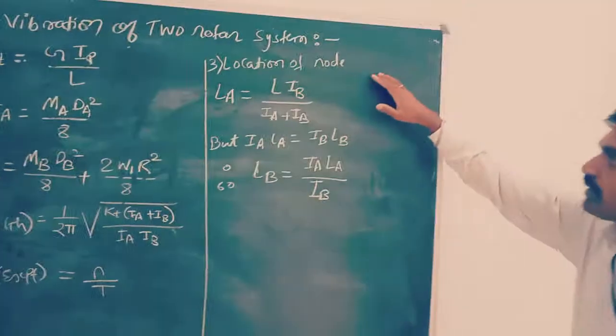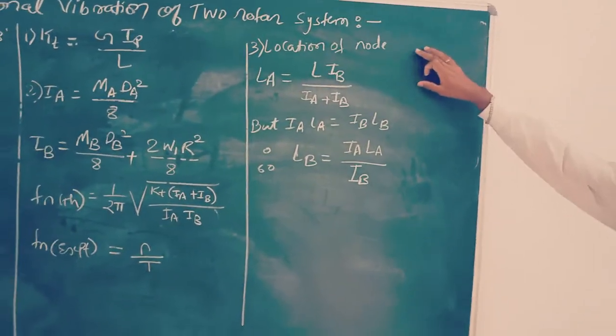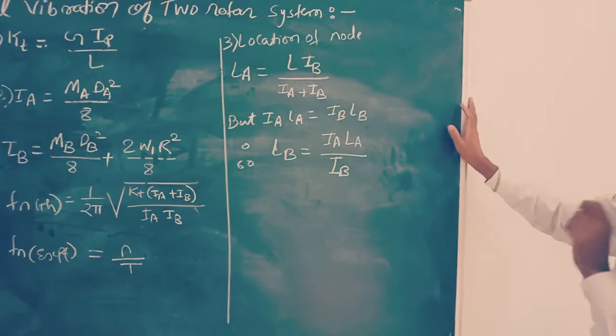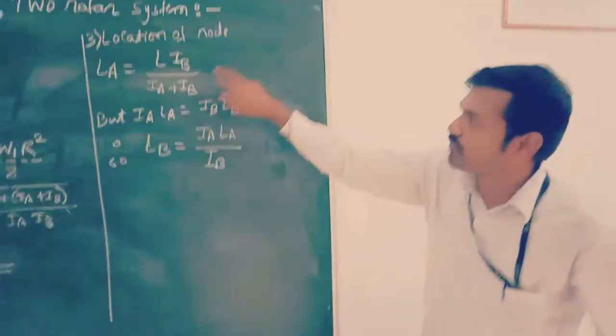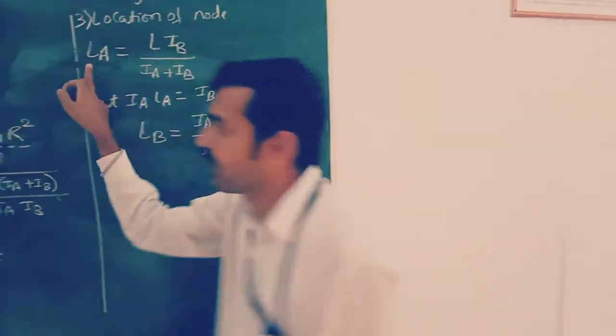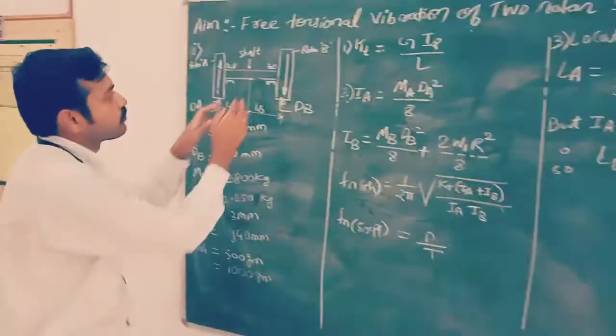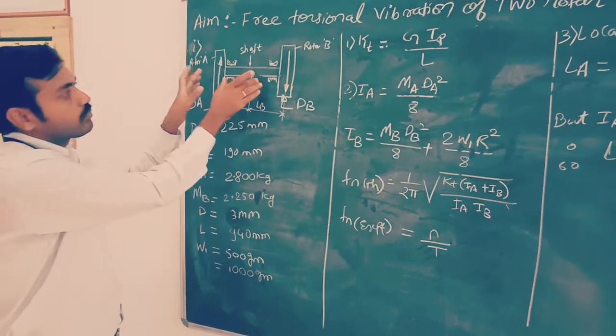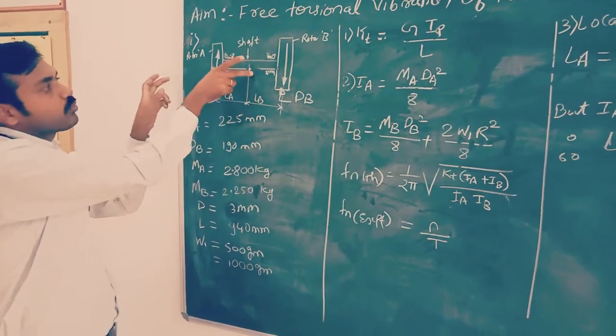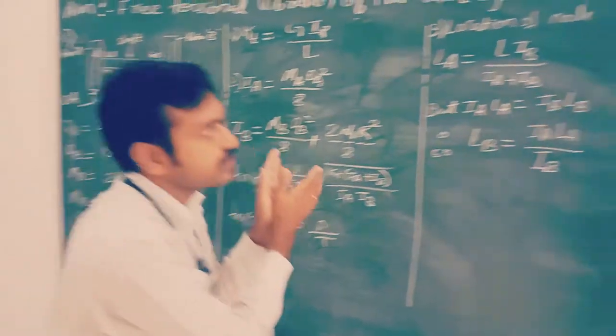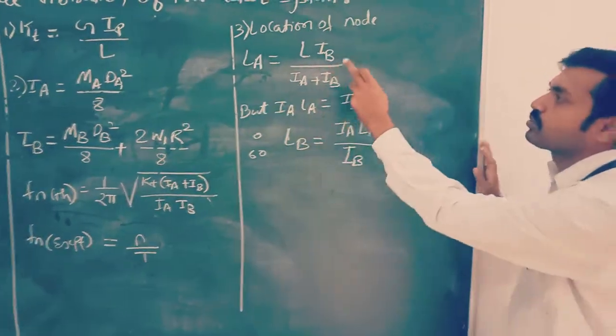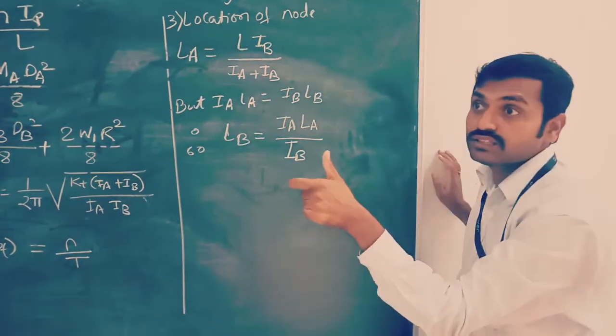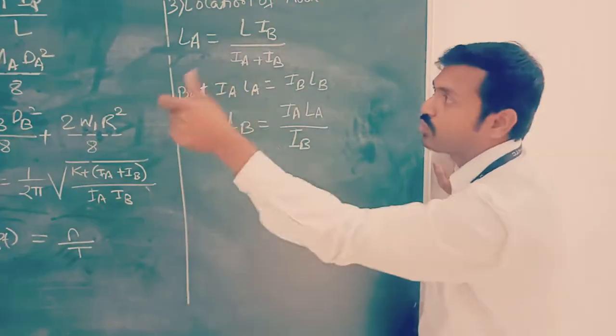The next part is the location of node point. Node means the point of zero amplitude that we have to find out on the length of the shaft. So La, suppose node point is here, distance between node point and rotor is that length. La equals L times Ib upon Ia plus Ib. From this we will come to know the distance between rotor A and node point, that is La.